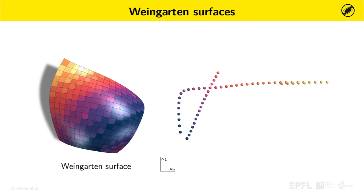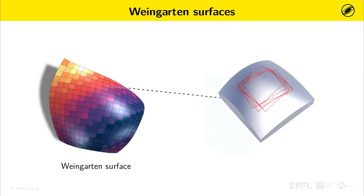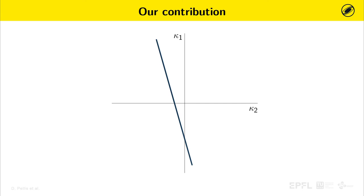Indeed, panels disposed along curvature isolines have a similar shape and therefore can be formed on the same mold. By reducing the number of molds, we can significantly reduce the cost of smooth architectural panelization.